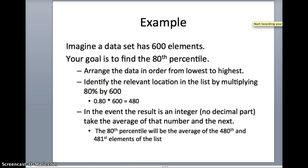For the next example, we're going to look at a data set with 600 elements, and our goal is to find the 80th percentile. We're going to arrange the data in order from lowest to highest again, and we need to be better than 80% of the numbers. That's 80% of 600, 0.80 times 600 gives us 480.